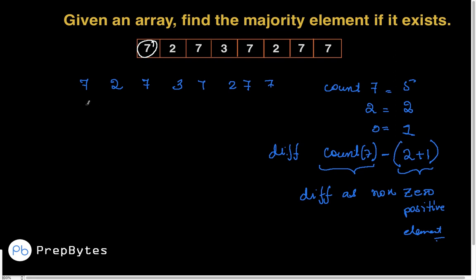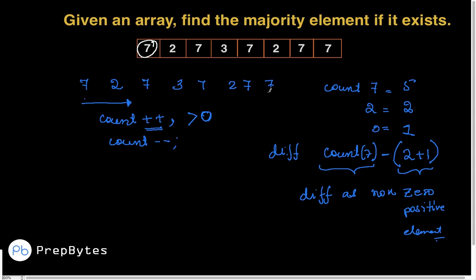The challenge is that while traversing we don't know which element is the majority element. If we knew, we'd simply calculate its frequency. So the key insight is: as we traverse, we assume a candidate majority element. When the count reaches 0, the majority element has been cancelled out by non-majority elements up to that point, so we update our candidate to the next element.